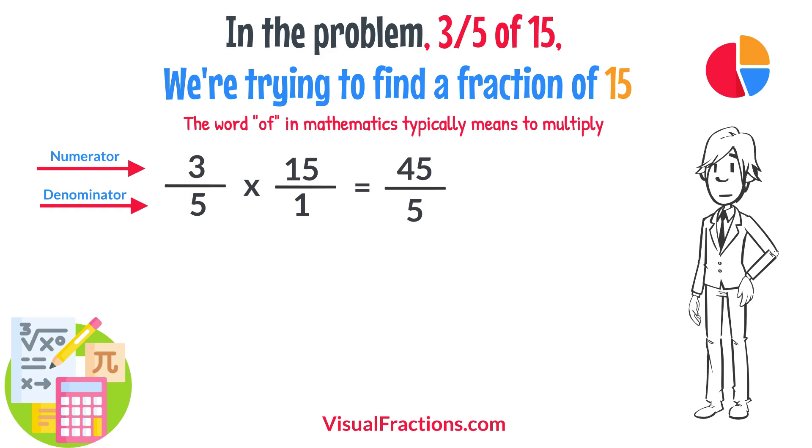To find the final answer, divide the numerator by the denominator. So, 45 divided by 5 equals 9.